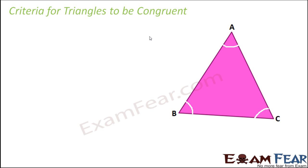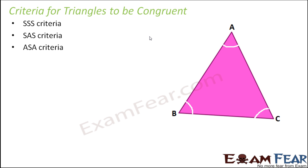So if we really want to compare two triangles and determine whether they are congruent or not, just measuring one of the angles or one of the sides will not help. We need to ensure that all the sides are equal and the angles are equal, and that's going to be a tedious task every time. That is why there exist four criteria for two triangles to be congruent, and if any of these four criteria is true, the two triangles are congruent.